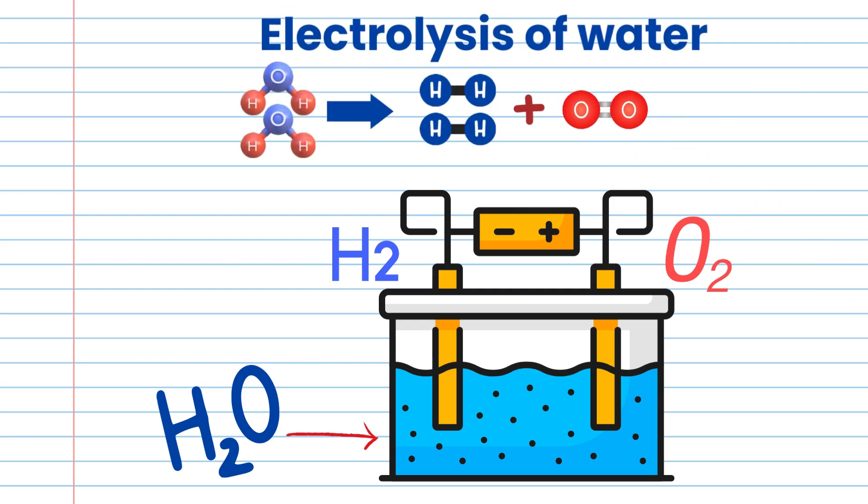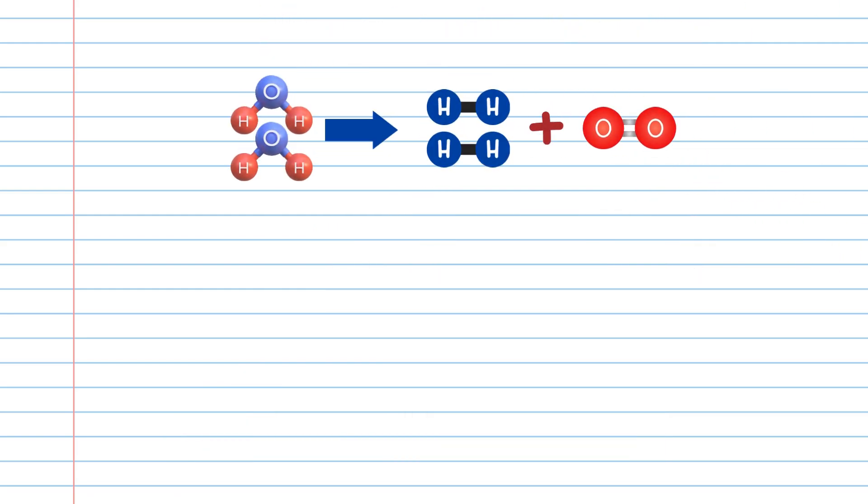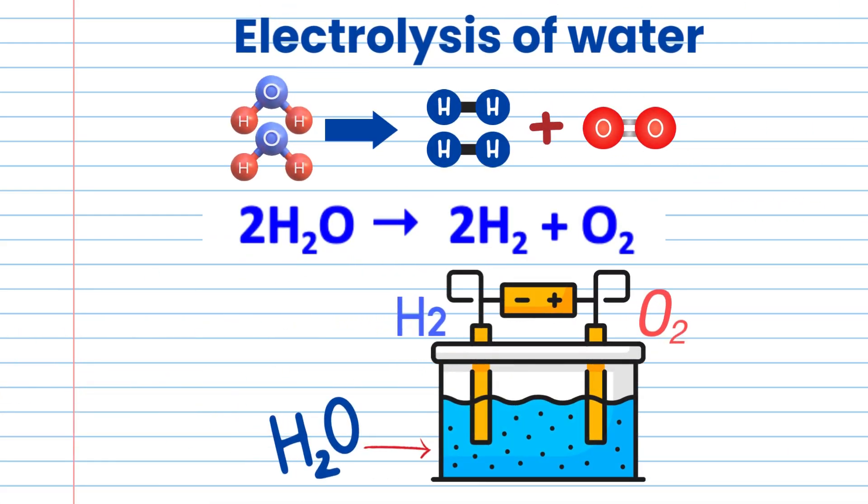Electrolysis of water is a decomposition reaction. When electric current is passed through water, water breaks down into its constituent elements, hydrogen and oxygen.